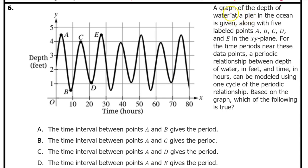Number 6. A graph of the depth of water at a pier in the ocean is given, along with 5 labeled points A, B, C, D, and E in the xy plane. For the time periods near these data points, a periodic relationship between the depth of the water in feet and time in hours can be modeled using one cycle of the periodic relationship. Based on the graph, which of the following is true?